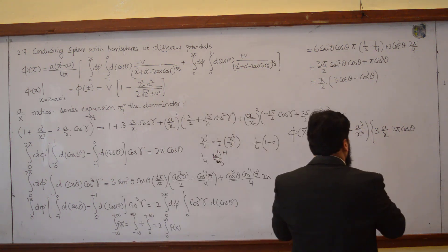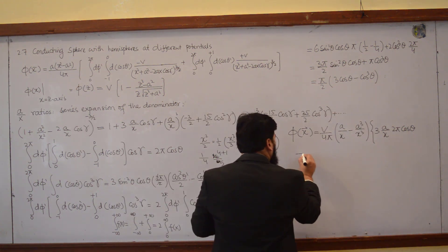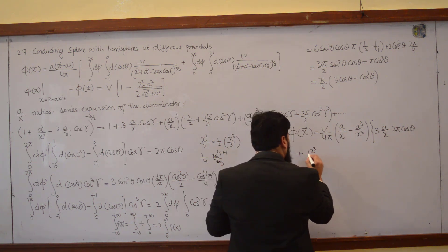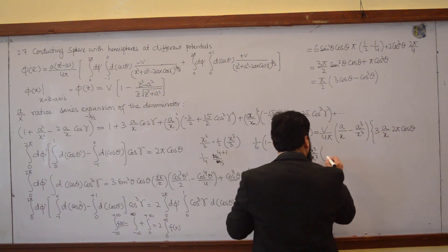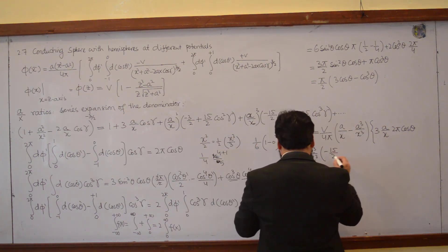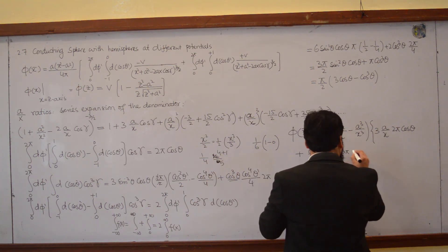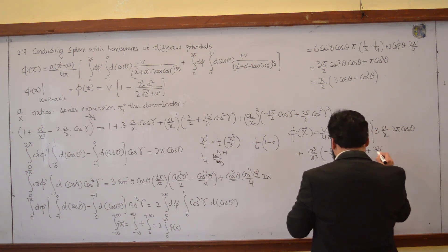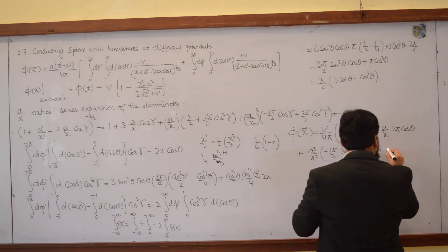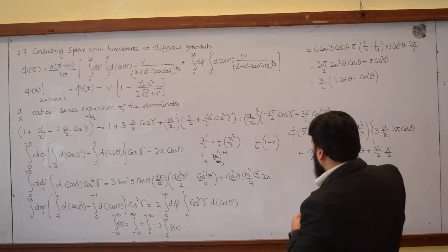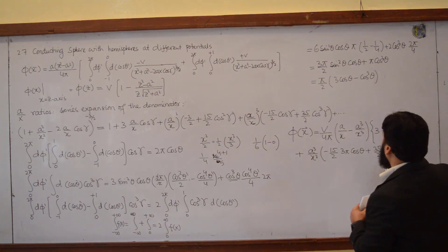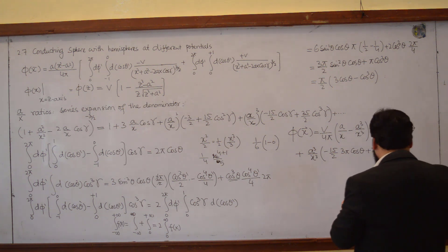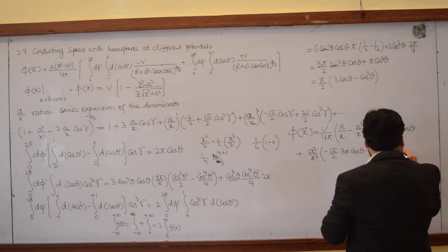So: 2π cosθ, and then plus — again a cube over x cube is coming — so a cube over x cube, minus 15 over 2, and 3π cosθ. Then: 3 minus cosθ plus 35 over 2, π by 2. Now from where this is coming — π/2 here, and now cos cube gamma will come in. So 3 minus cosθ.